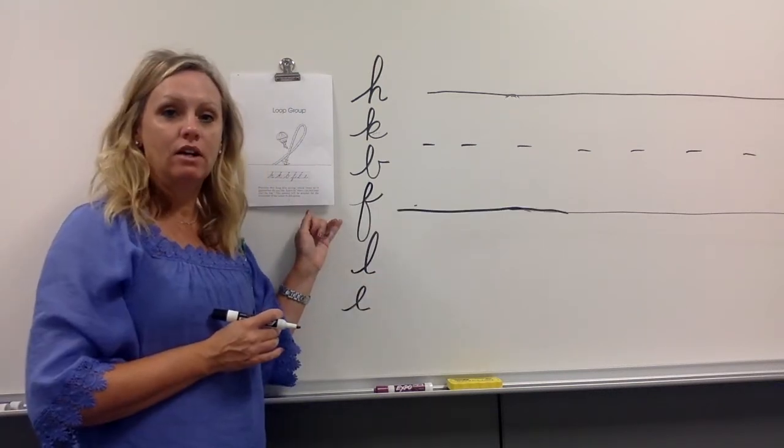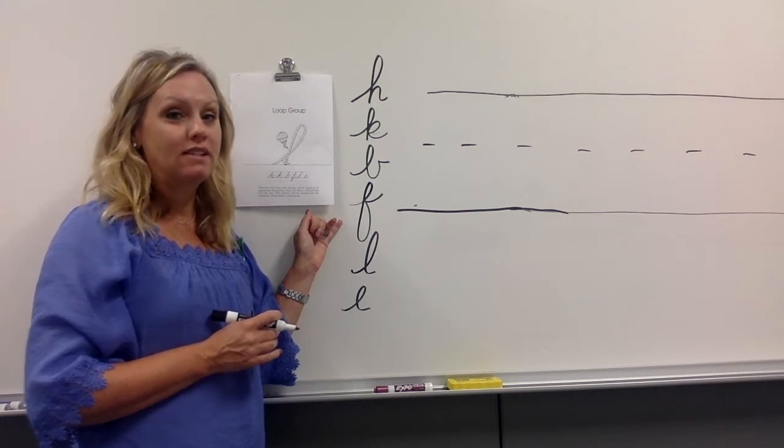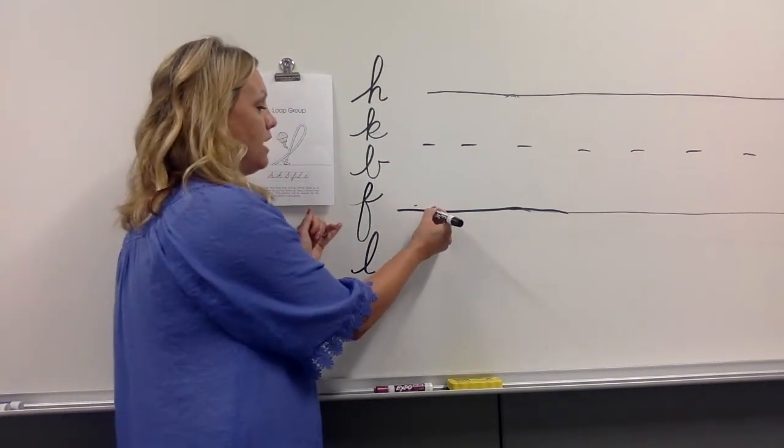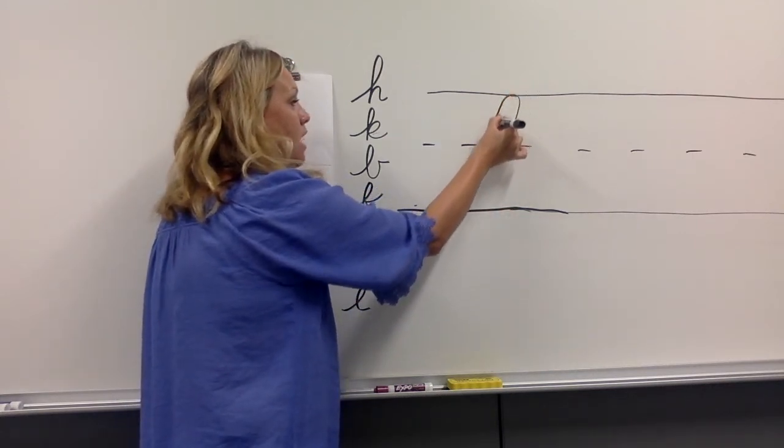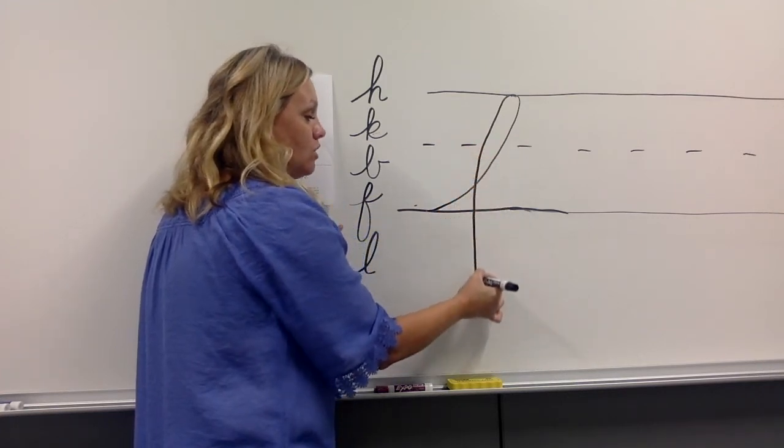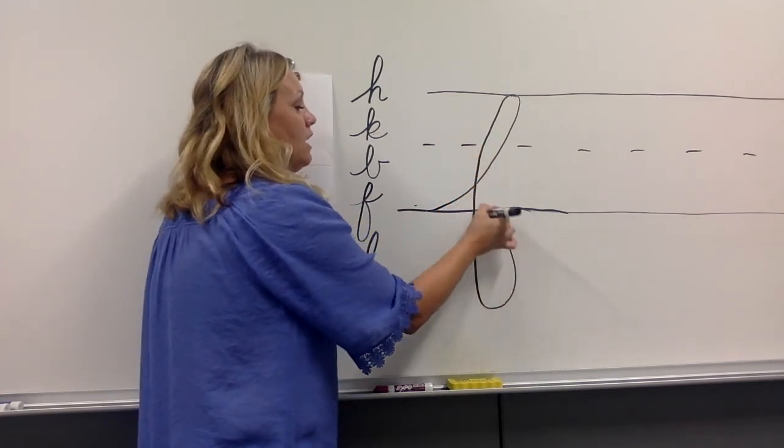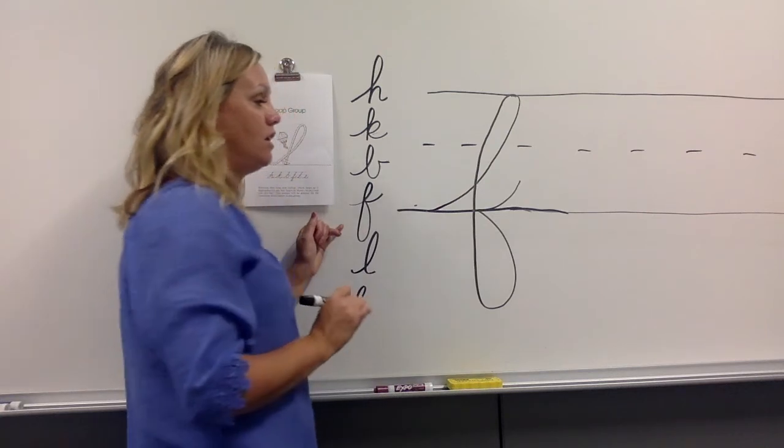The next lowercase letter is lowercase F. This has a lot of loops in it. You're going to start at your bottom writing line and loop all the way to the top, back around, pull down straight, go under the writing line, loop in, touch the bottom writing line, and then release.